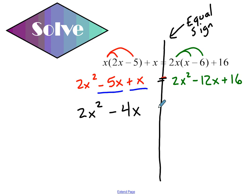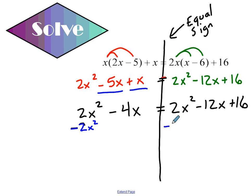On the right-hand side I don't have any like terms, so I just simply rewrite it as it is. My next step: I need to get rid of my x squared. So I'm going to subtract 2x squared on both sides. That leaves me with negative 4x equals negative 12x plus 16.